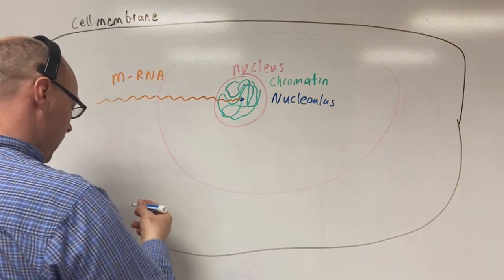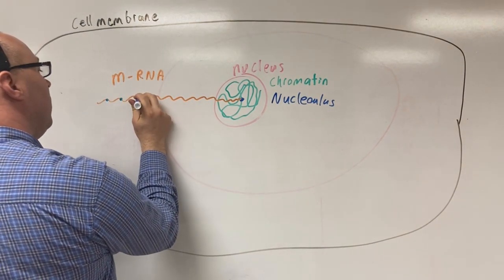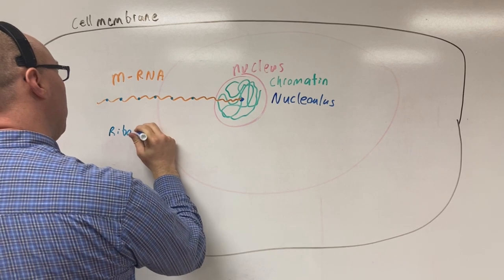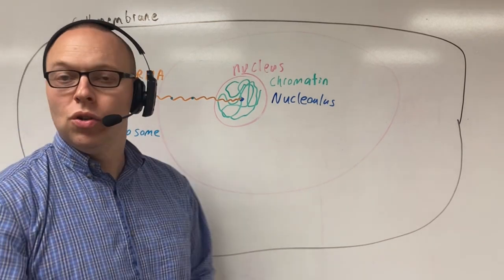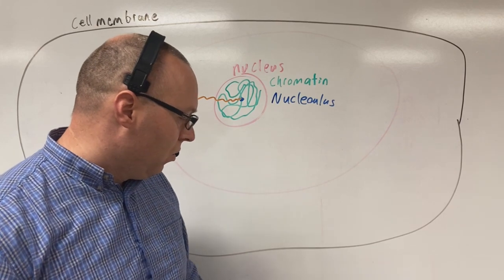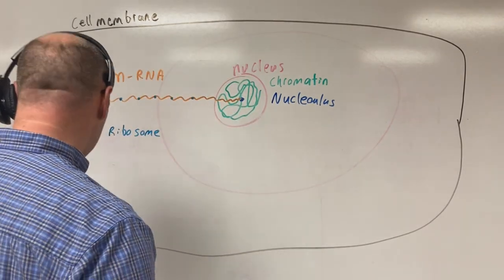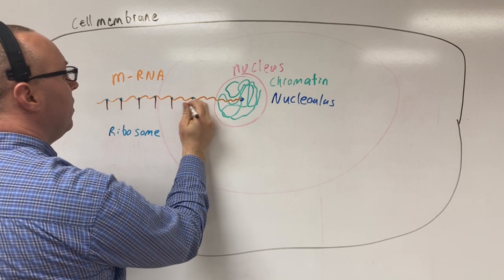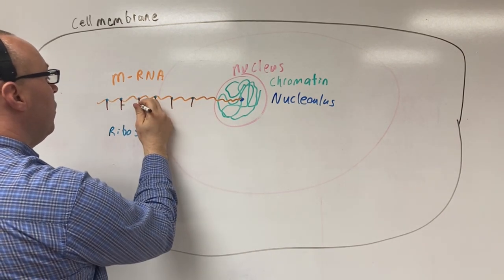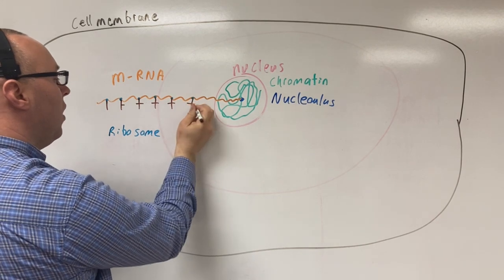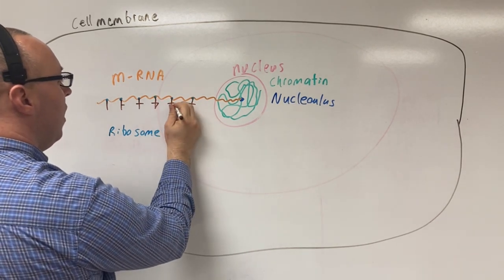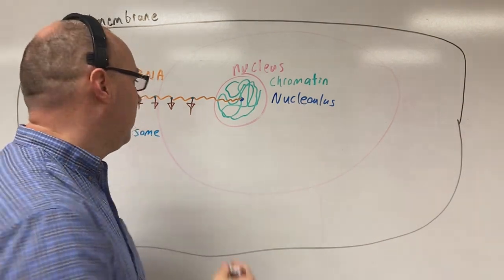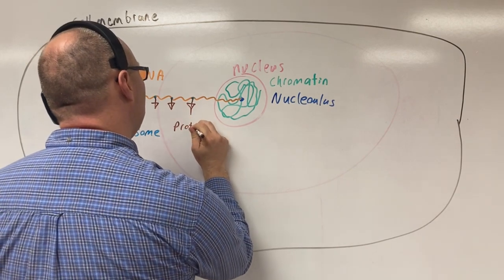The next structure — we're going to put little dots on our mRNA, and these are ribosomes. Ribosomes read the mRNA. We've got this mRNA, but what does it mean? The ribosomes' job is to make sense of this messenger mRNA, and this is what's actually allowing us to make proteins.